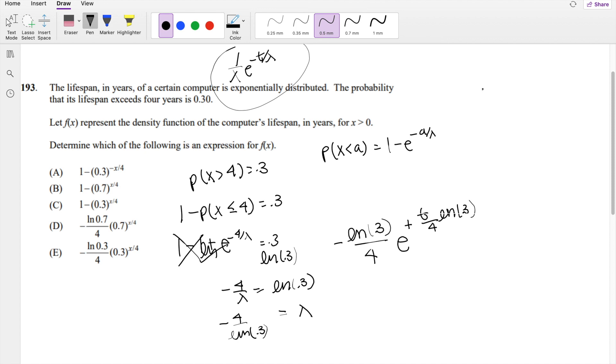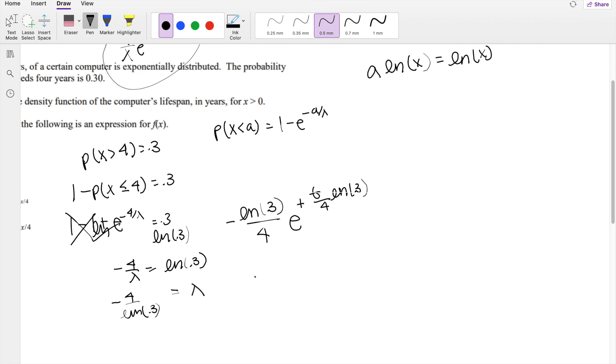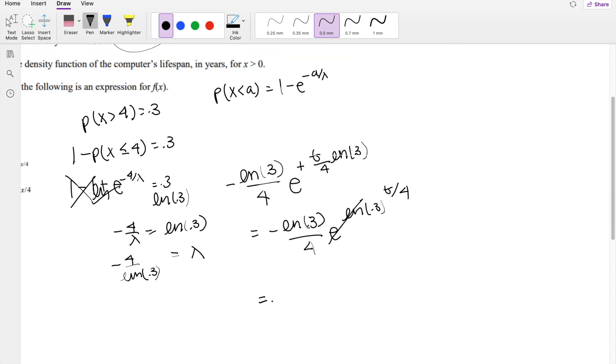We can actually remember that rule where if there is a value in front of natural log, this is equivalent to saying the natural log x raised to that power. So same idea here. So this is equal to negative natural log of 0.3 over 4, e to the natural log of 0.3 raised to the t over 4. And now this way we can cancel out this e and natural log. And we get this is equal to negative natural log of 0.3 over 4, 0.3 raised to the t over 4th power,